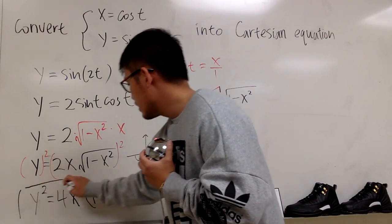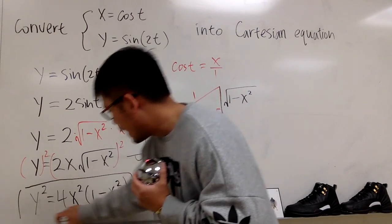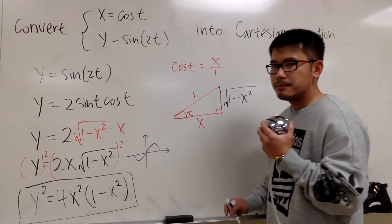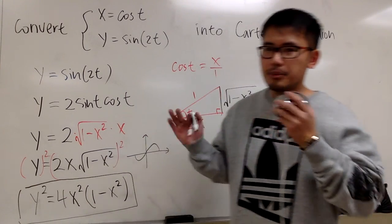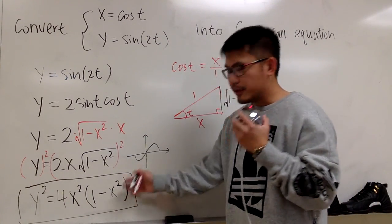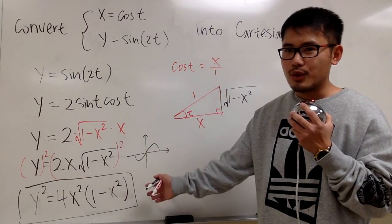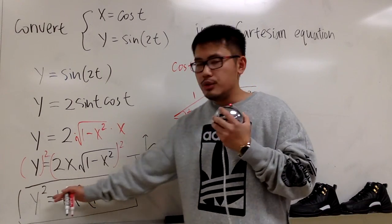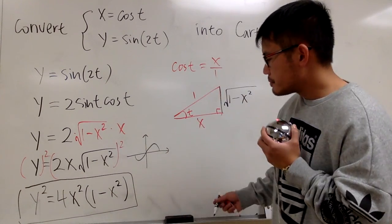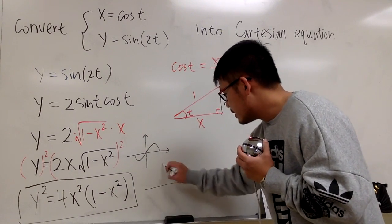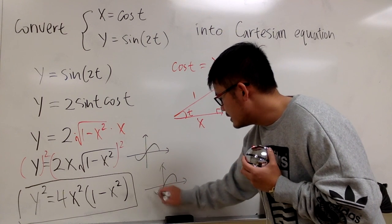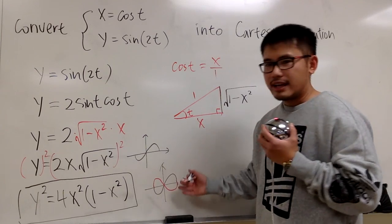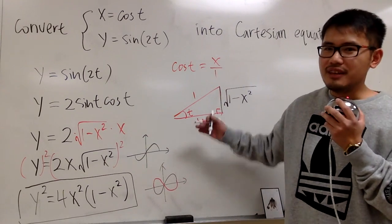This is the answer I'd like to present: y squared equals 4x squared times (1 minus x squared). If you type this into a computer graphing software — not just a graphing calculator where y isn't isolated — you'll get the complete graph, which includes both portions. I call this the graph of the infinity sign.